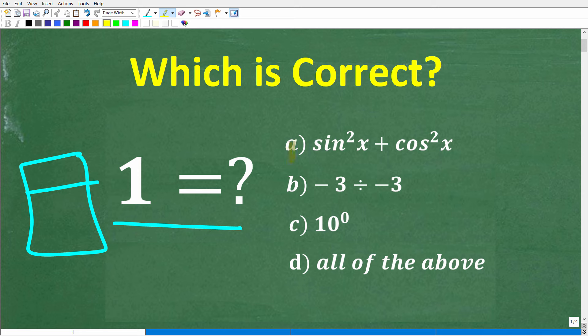Our first option is A, and that is sine squared x plus cosine squared x. Now, what does this mean? I'll explain this in just one second, but that is A. B is negative three divided by negative three. C is 10 to the zero power, and D is all of the above.